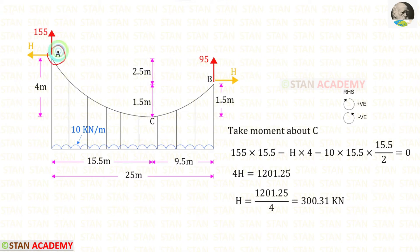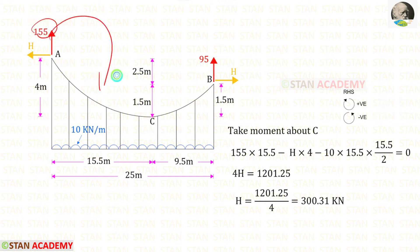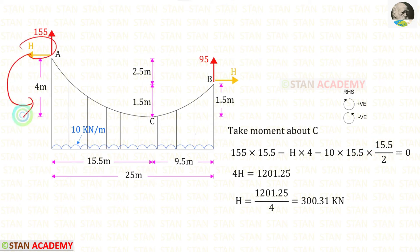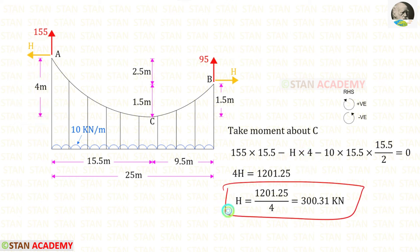From point A, let us take moments about C to find the horizontal thrust H. We follow the right-hand rule: clockwise is positive and anticlockwise is negative. Va acts clockwise, so it is positive with distance 15.5 m. The UDL acts anticlockwise, so it is negative, multiplied by the distance and distance divided by 2. The horizontal thrust H also acts anticlockwise, negative, with perpendicular distance 4 meters. Finally, the horizontal thrust H = 300.31 kN.